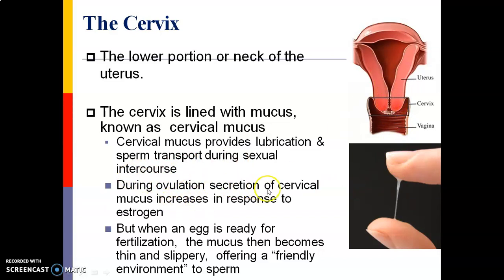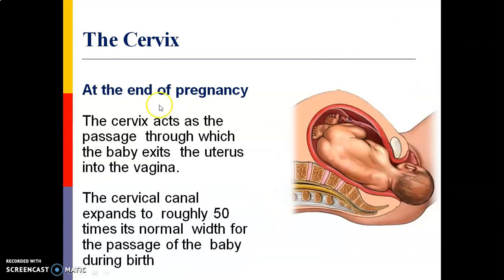Secretions of cervical mucus increase in response to estrogen. When an egg is ready for fertilization, the mucus becomes thin and slippery, offering a friendly environment to sperm. At the end of pregnancy, the cervix acts as a passage through which the baby moves from the uterus into the vagina. The cervical canal expands to approximately 50 times its normal width during the passage of the baby at birth.